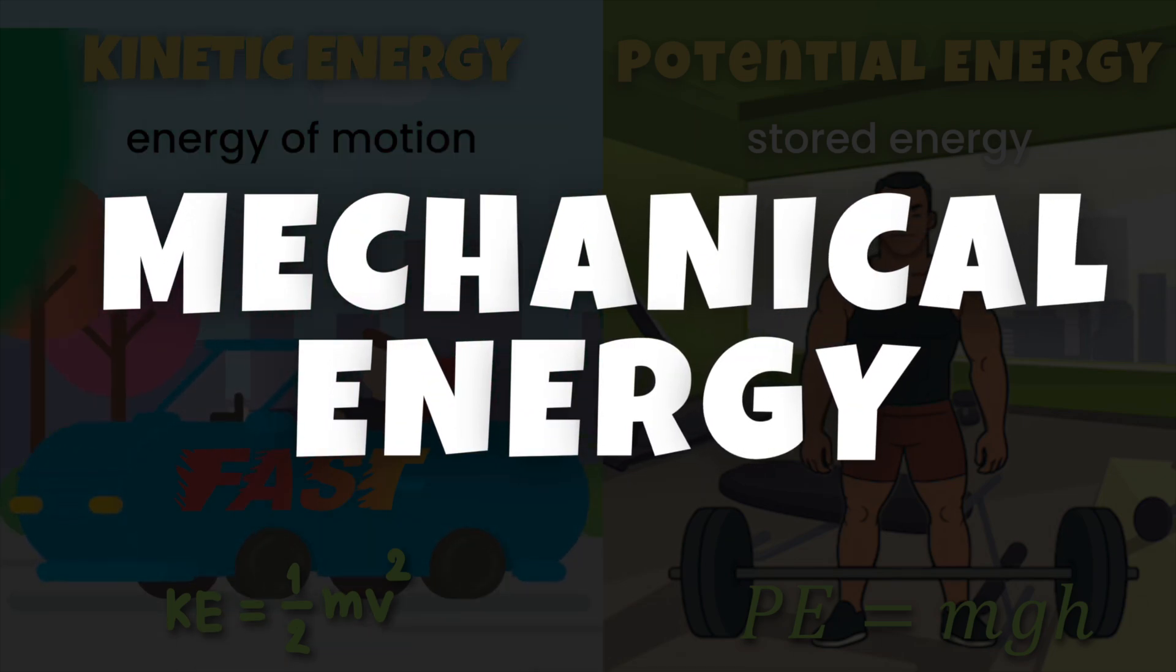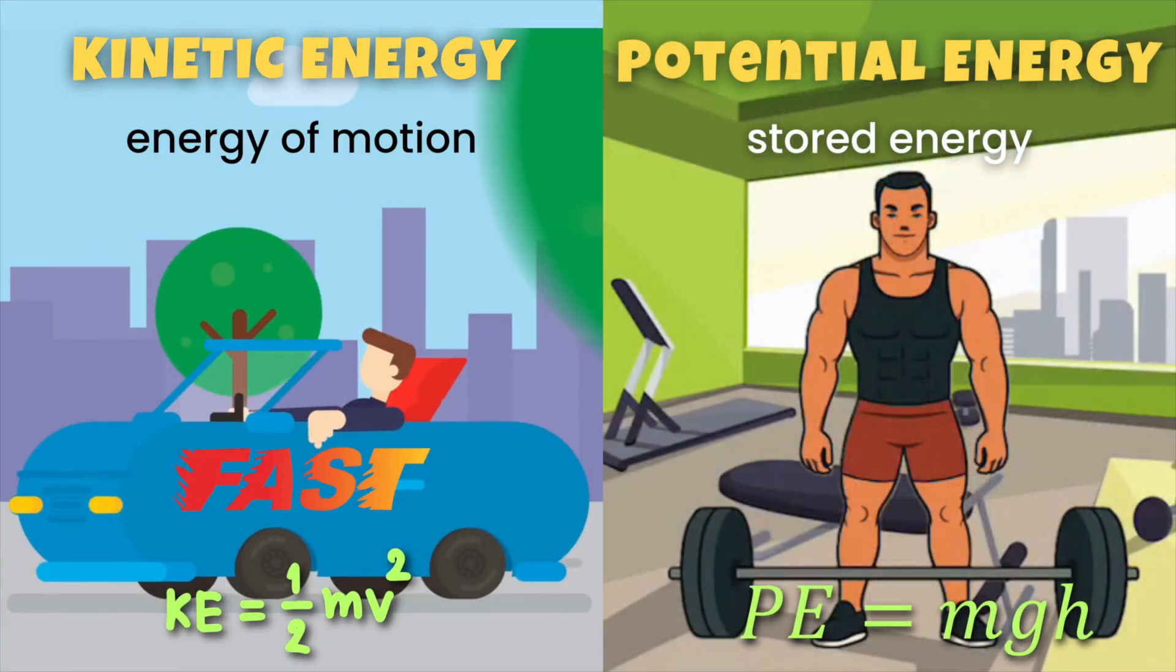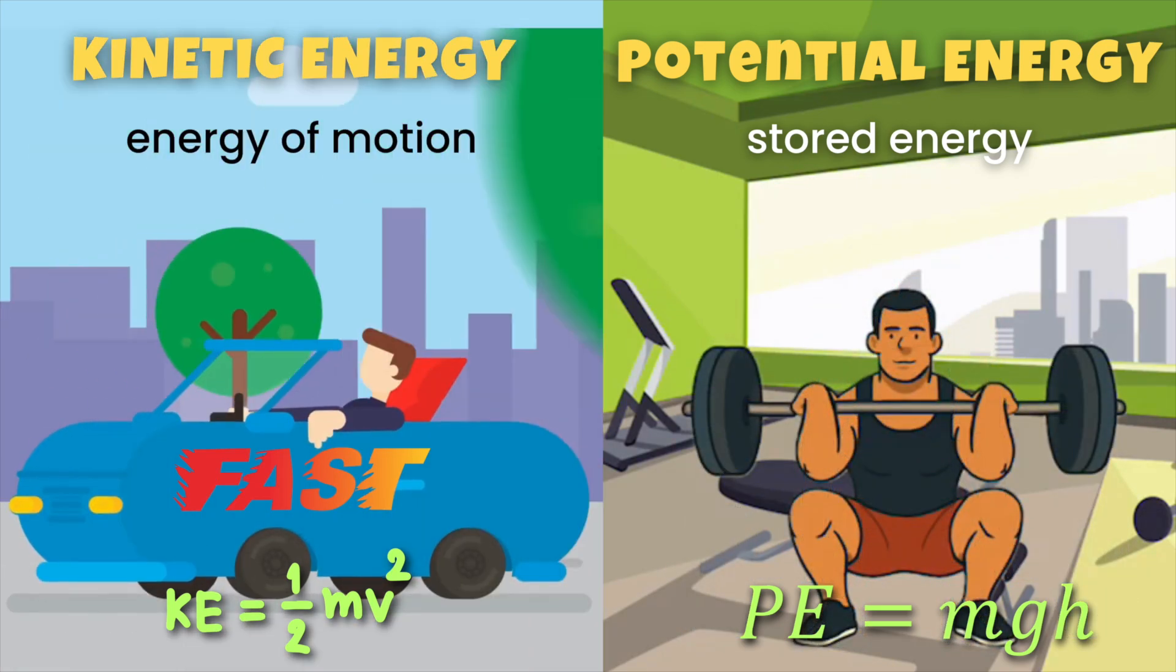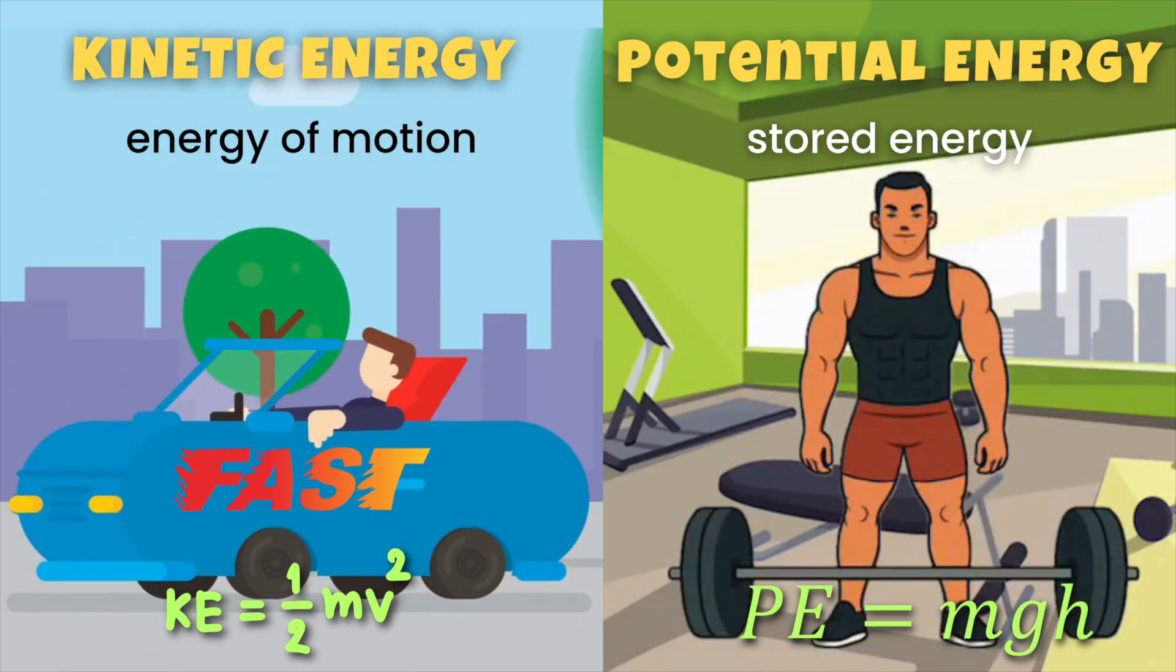Both of these are forms of mechanical energy - the energy an object has because of its motion and position. They constantly shift back and forth as objects move through space. In this video we are putting it all together to understand how they interact.